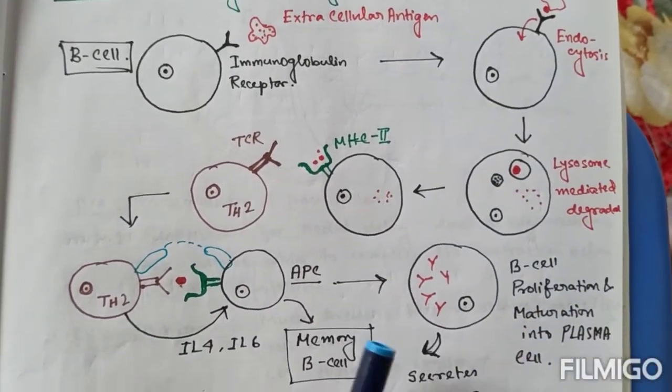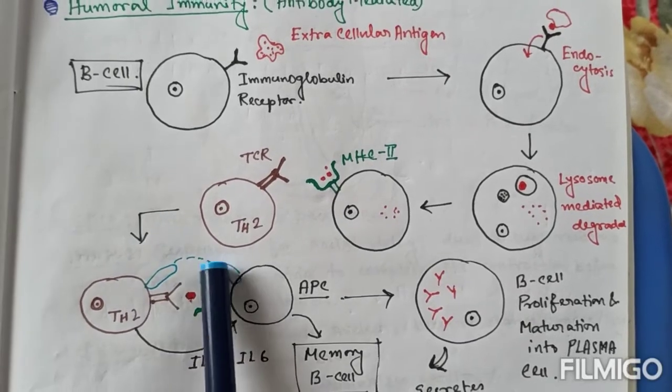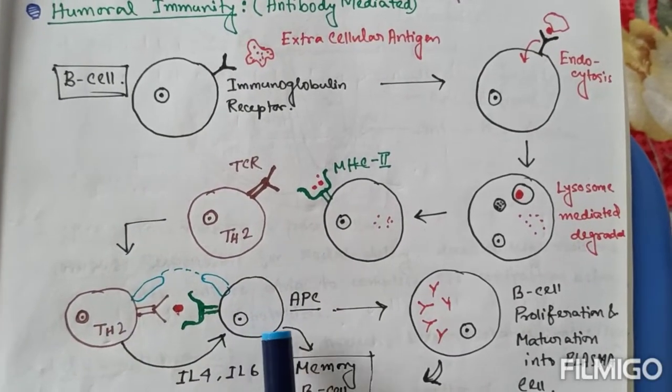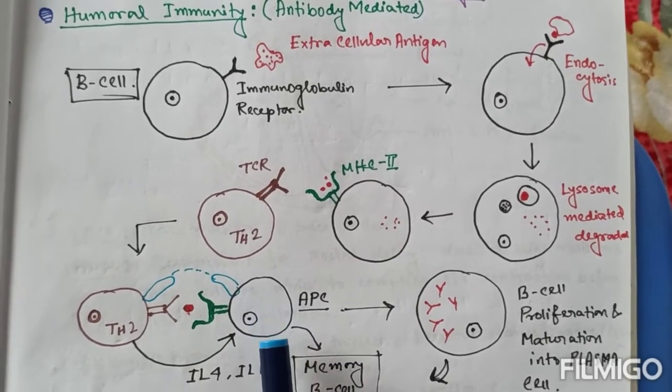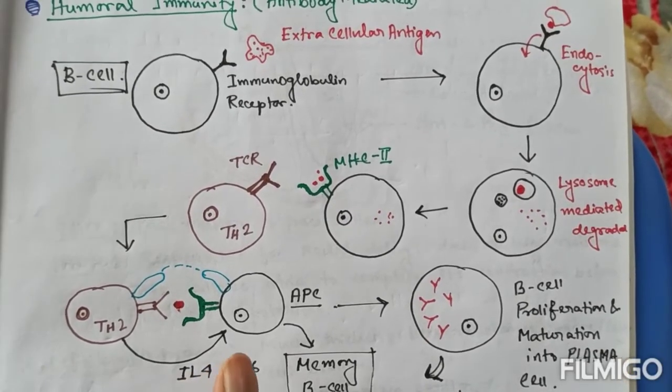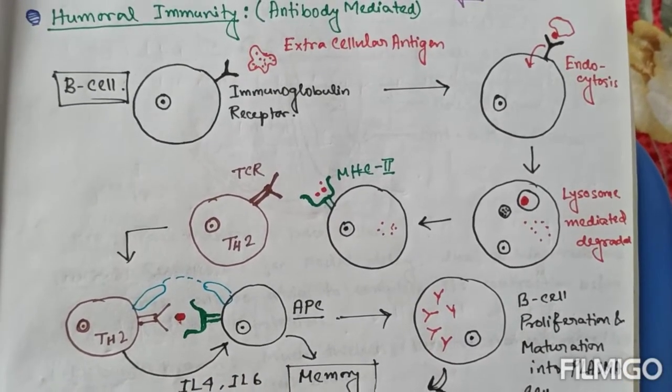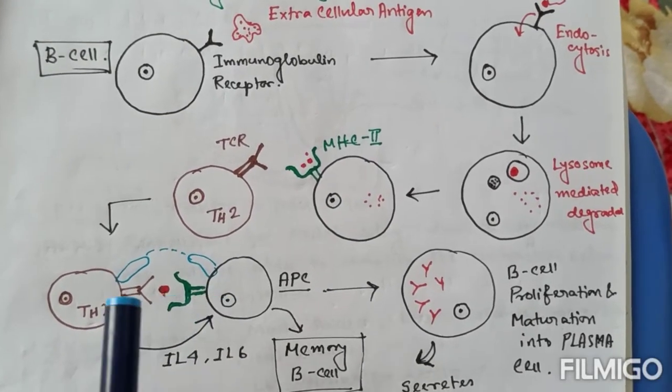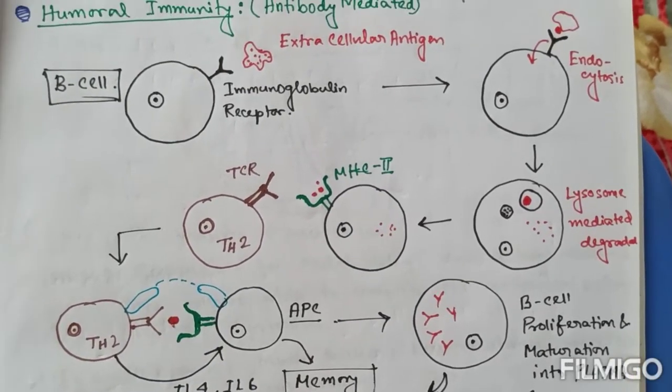And then there is some cellular communication between helper T-cell type II and the B-lymphocyte. Here B-lymphocyte itself presenting the antigen. Hence it can be regarded as antigen presenting cell here. So there is cellular communication, cellular talking in between helper T-cell and B-cell.